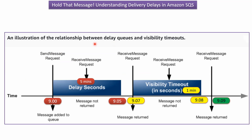Now we will see the relationship between delay queues and visibility timeouts. At 9 o'clock, a send message request comes and the message is added to the queue. Suppose the delivery delay is 5 minutes — during that period, if a receive message request comes, the message won't be returned. After 5 minutes, a receive message request comes and the message is returned. Immediately, the visibility timeout starts — suppose it is 1 minute. During that visibility timeout window, if another receive message request comes, the message won't be returned. After the visibility timeout expires, the message will be visible again and will be returned on the next request.